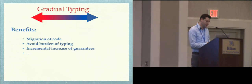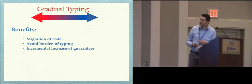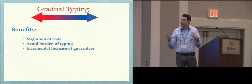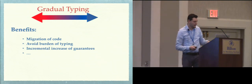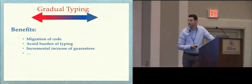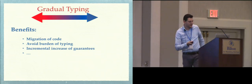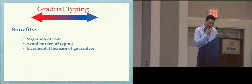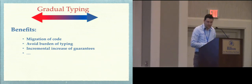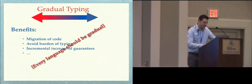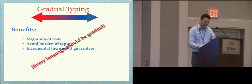We have many benefits in using Gradual Typing. There is this migration of code — the programmer has the comfort of adding and removing type annotations, and sometimes can avoid the burden of making the compiler happy with type annotations. Sometimes it's nice to add static checking in order to increase our guarantees, and guarantees are basically proportional to the effort of the programmer. The implication is that every language should be gradual, and we should work for it.